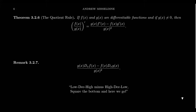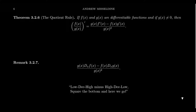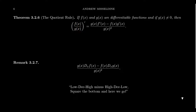In this video I want to talk about the so-called quotient rule for derivatives, because the derivative of a quotient is a little bit more complicated than that of a product. If f and g are differentiable functions and g of x does not equal zero at the point we're interested in, then the derivative of f divided by g is: g of x times f prime of x minus f of x times g prime of x, all divided by g of x squared.